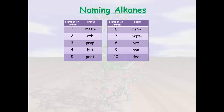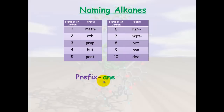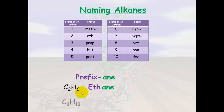When we name alkanes we use these prefixes, and this works for naming alkanes, alkenes, and alkynes too. It's based on the number of carbon atoms: 1 carbon = meth-, 2 = eth-, 3 = prop-, 4 = but-, 5 = pent-, 6 = hex-, 7 = hept-, 8 = oct-, 9 = non-, 10 = dec-. We always put the prefix first and then add -ane at the end. For example, C2H6 has 2 carbons, so the prefix is eth-, giving us ethane. C8 has 8 carbons, so it's oct- plus -ane: octane.